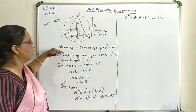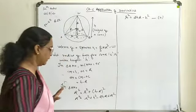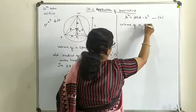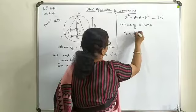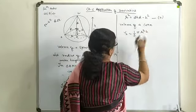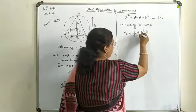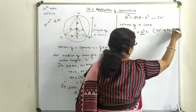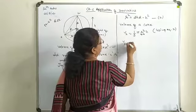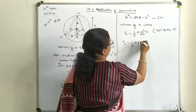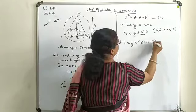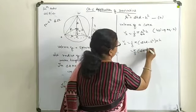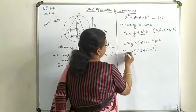Next we move to the volume of the cone to be linked. Volume of cone V2 = (1/3)πr²h. Here r² is replaced using equation two: V2 = (1/3)π(2hR − h²)·h. Multiplying h inside the bracket gives V2 = (π/3)(2Rh² − h³).